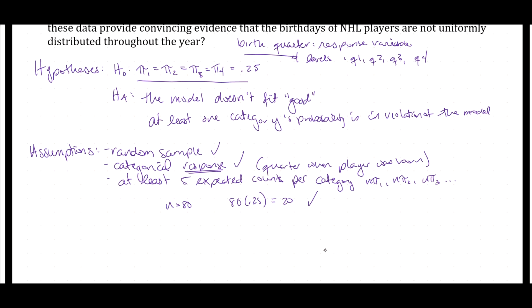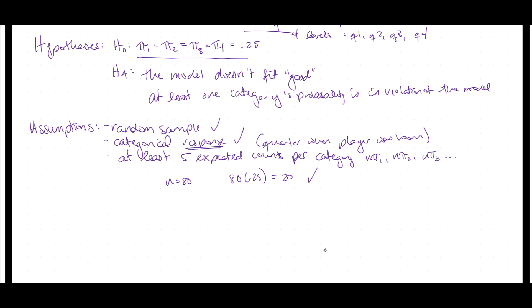Those are the only three assumptions, and they are familiar from what we've seen before: a random sample, a categorical response defining our categories (which quarter was each player born in?), and at least five expected counts per category. Then we find our test statistic. Because this is a chi-squared test, it is going to be chi-squared observed, found the exact same way as before: the sum of observed counts minus expected counts squared divided by expected counts, summed over all categories. In this case there are four quarters, so we're going to have four terms in our sum.